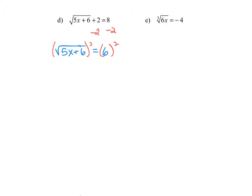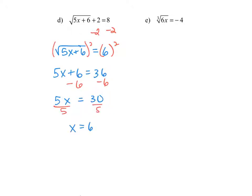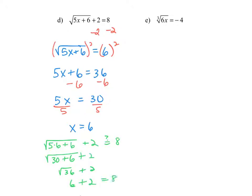Now we're in position to square both sides because we've got the radical by itself. The square root of the quantity squared simplifies the left side to 5x plus 6, and the right side to 36. We subtract 6 from both sides to get 5x equals 30, then divide both sides by 5 to get x equals 6. Checking: the square root of 5 times 6 plus 6, plus 2 — that's the square root of 36, which is 6, and 6 plus 2 does equal 8. So x equals 6 is a solution.